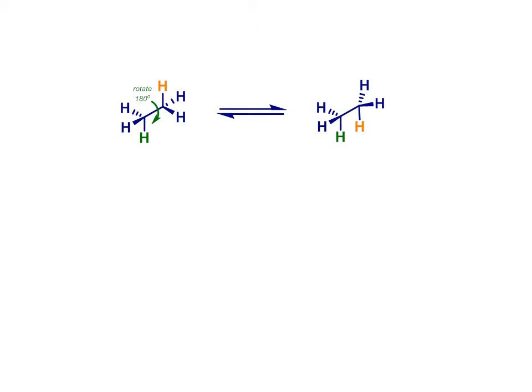Before we go any further, we need to know how to draw different conformations. Remember that in these two structures, and others like them, the thick wedged bonds are coming out of the page towards us, while the hashed or dashed ones are going into the page away from us.